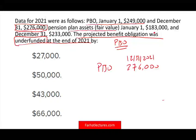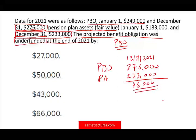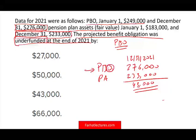Pension plan assets at fair value: January 1st $183,000, December 31st $233,000. Since we're looking at 2021, our plan assets are $233,000. We take the difference between the two: $276,000 minus $233,000 gives a difference of $43,000. They already tell us it's underfunded. My obligation — my PBO — is more than my assets. I have more obligation than assets, therefore I am underfunded. If my plan assets exceeded my obligation, that would be overfunded.